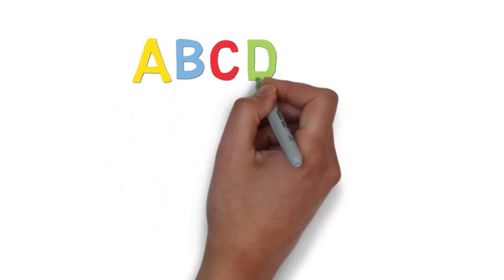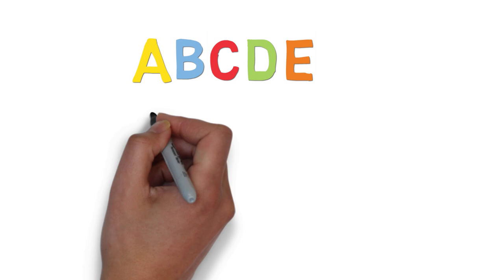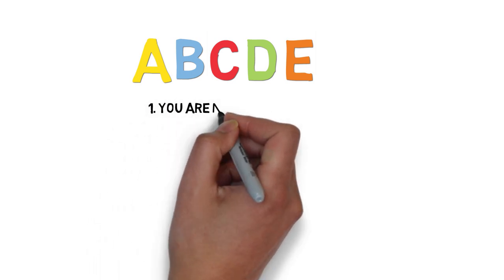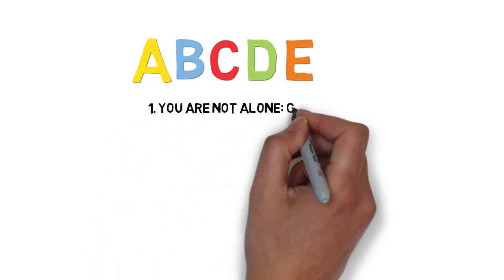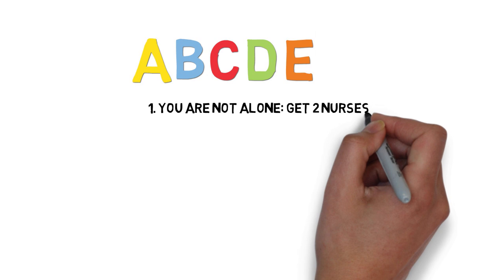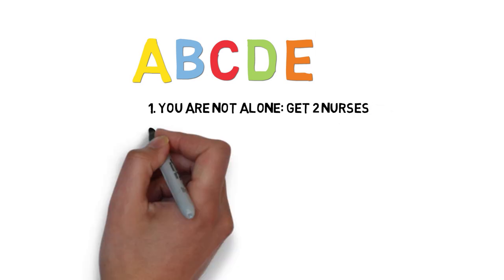A few important general notes when you go through your ABCs. Number one: You are not alone. Ask for two nurses to help you. One will stay at the bedside to assist you, and the other can get the things you need.